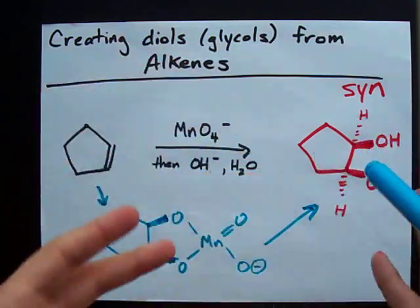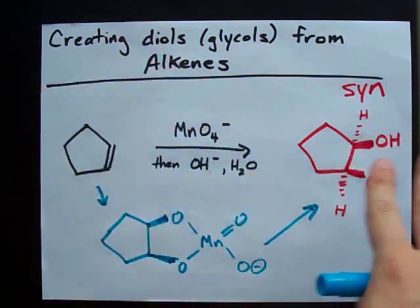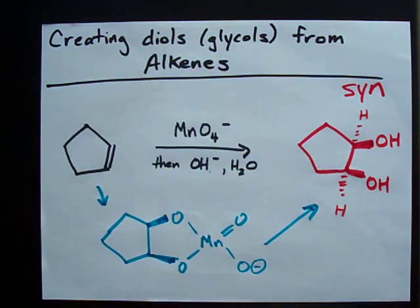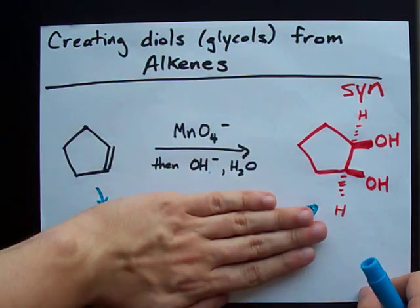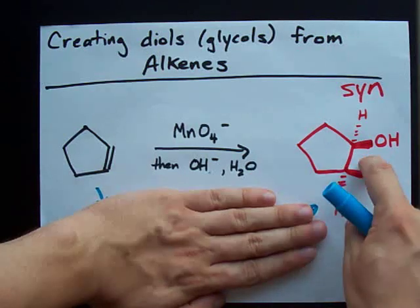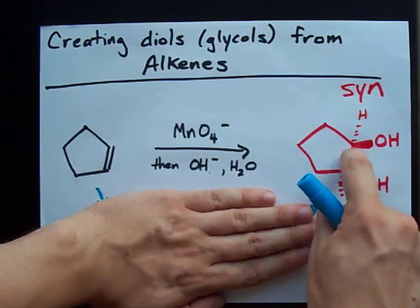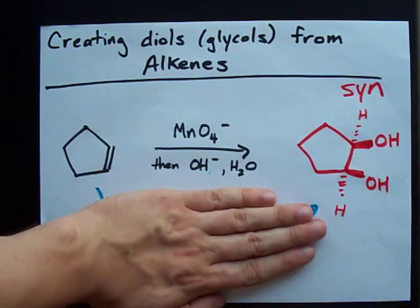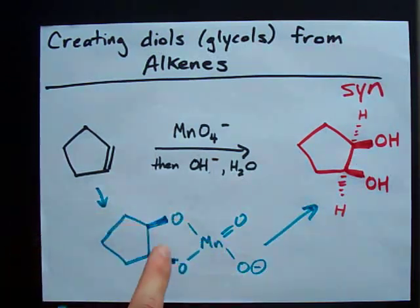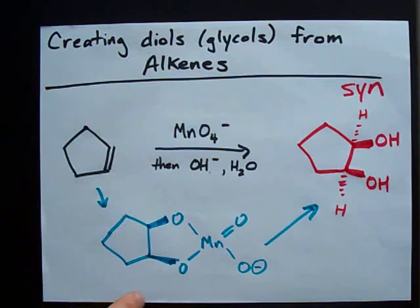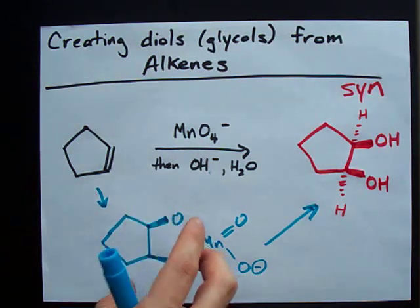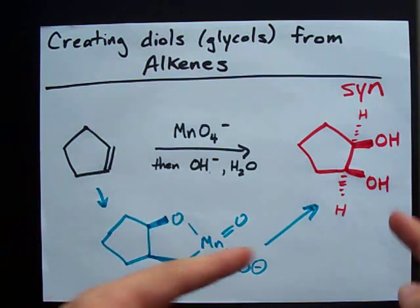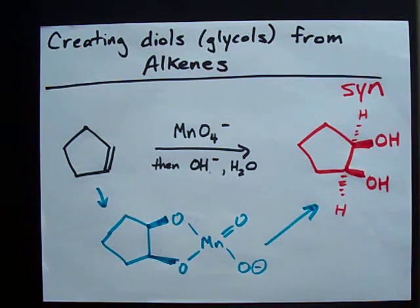In grade 11 or 12 chemistry, you're probably not going to have to know that. You're probably just going to have to know that it happens like this. But for those of you who are curious: the permanganate attacks, the double bond breaks open first, and then the OHs replace it. It's pretty cool.